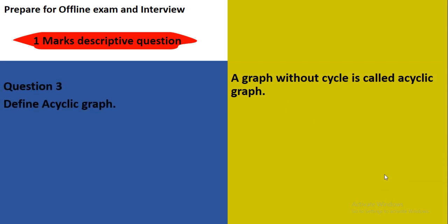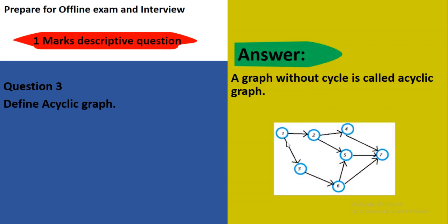Question number 3: Define an acyclic graph. An acyclic graph means a graph without cycle is called an acyclic graph. This means a cycle should not be present in the graph. Here is one example: 1 to 2, 2 to 4. Here edges are from 4 to different vertices, from 6 to 5, 6 to 3. See, here the edges are present, but it is from 3 to 6 because it is a directed graph.